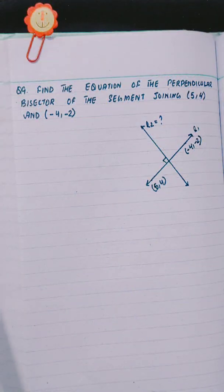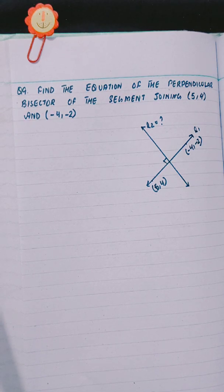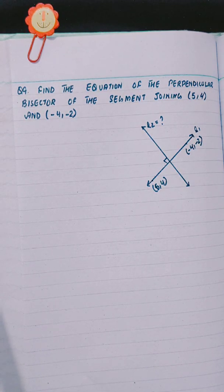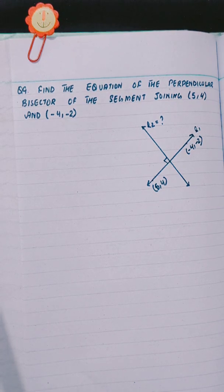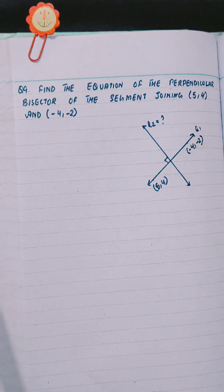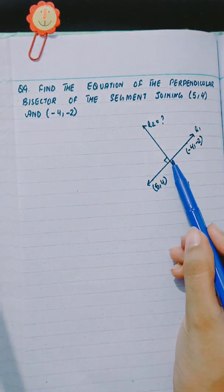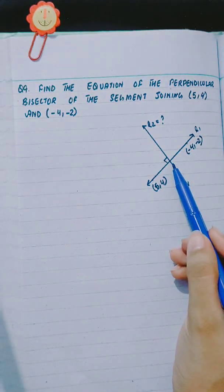Now, for the perpendicular bisector of the segment joining the points 5, 4 and minus 4, minus 2. Perpendicular bisector means that L2 cuts L1 at the midpoint.